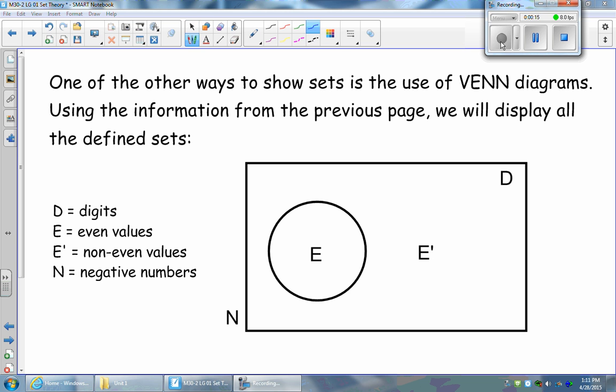So the first thing that you're going to do is you're going to draw a large rectangle. The large rectangle is going to represent your universal set. So in this case, our universal set is set D, all digits. All digits should fall within this universal set, within this large rectangle.